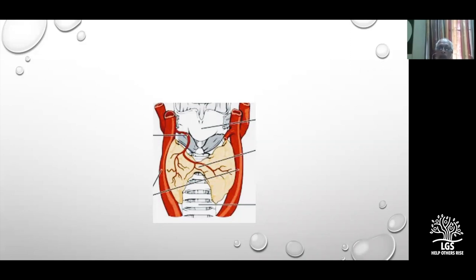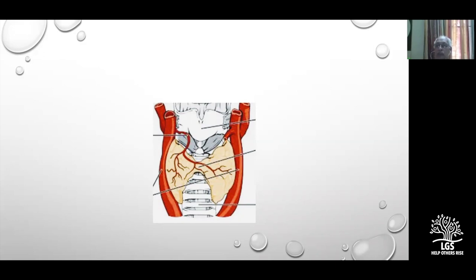Once you pick up and ligate the anterior branch, the two cut ends move apart. The superior pole is tethered to the gland by this anterior branch — once you divide it, that tethering disappears and dissection of the superior pole becomes much easier. Ask your assistant to retract the upper pole, and you can see the trunk of the main artery entering the gland. The principle is to ligate it as close to the gland as possible. You do not need to search for and identify the external branch of the superior laryngeal nerve — if you stick to this technique, the nerve is far away and will not be damaged.